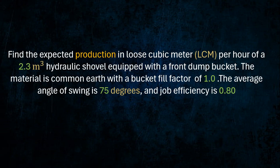Find the expected production in loose cubic meter per hour of a 2.3 cubic meter hydraulic shovel equipped with a front dump bucket. The material is common earth with a bucket fill factor of 1.0. The average angle of swing is 75 degrees and job efficiency is 0.80.